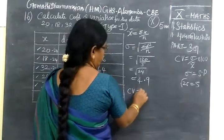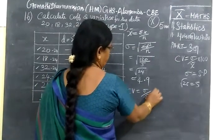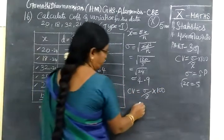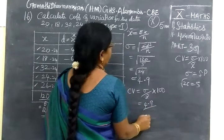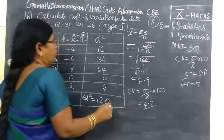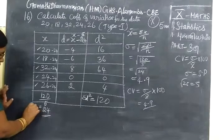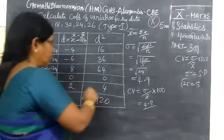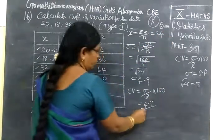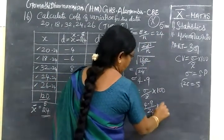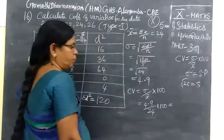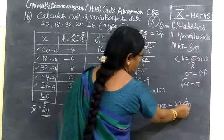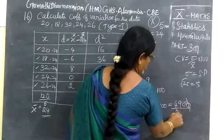Then, now you find CV equal to sigma by x bar into 100. So, sigma minus 4.9 by x bar is what? x bar 24. This is x bar. x bar is what is sigma x by n. 24. So, 24 into 100. So multiply it. 4, 9. Run to 0, 1, 0. Cut it. 5 for example. By 24.